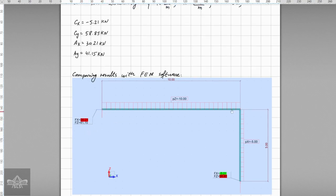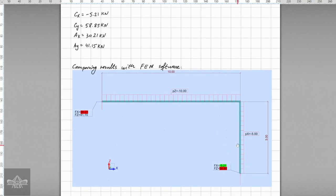For example, we have this is our point A, this is point B, and this is point C. So for point A, the component Ax is 30.21 kilonewtons, which is correct from our hand calculations. Also Ay we calculated by hand 41.15 kilonewtons and we got the same from the software. And the same thing is valid for support reactions at point C.